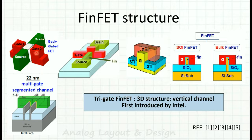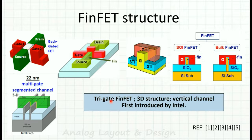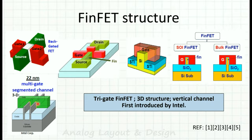This is the FinFET structure: the fin, gate 1 and gate 2 are the two side gates controlling the channel, with drain and source on either side — a double gate structure. They then wrapped the gate around all three sides, controlling the top surface as well, making it a tri-gate FinFET. It is also called a vertical channel or 3D structure. Multiple fins are used to carry more current — fin width is constant, so width is increased by adding more fins.